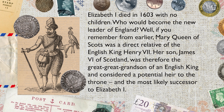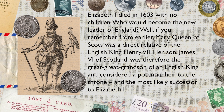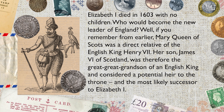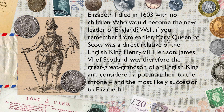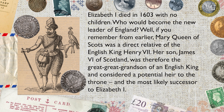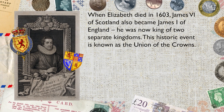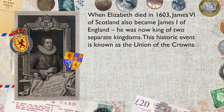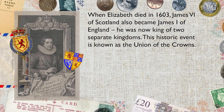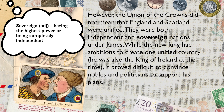Elizabeth I died in 1603 with no children. So who would become the new leader of England? Well, Mary Queen of Scots was a direct relative of the English king Henry VII. Her son, James VI of Scotland, was therefore the great-great-grandson of an English king, and considered a potential heir to the throne and the most likely successor to Elizabeth I. When Elizabeth died in 1603, James VI of Scotland also became James I of England — he was now king of two separate kingdoms. This historic event is known as the Union of Crowns. However, the Union of Crowns did not mean that England and Scotland were unified — they were both independent and sovereign nations under James; they were not one country.